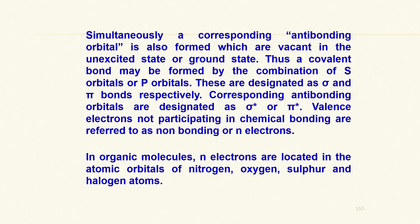Simultaneously, a corresponding anti-bonding orbital is also formed in space at higher energy than the bonding energy. Bonds such as ionic bonds, covalent bonds, and coordinate bonds are formed by combinations of s, p, and sometimes d orbitals, and are designated as sigma and pi bonds respectively. Corresponding anti-bonding orbitals are sigma-star and pi-star.